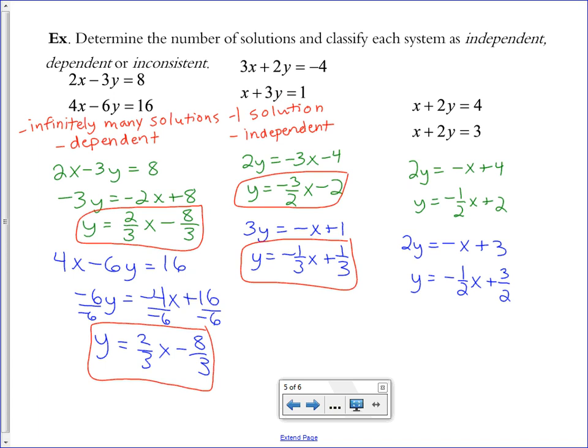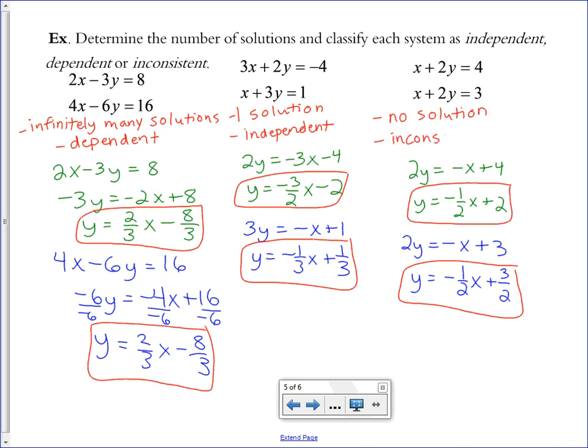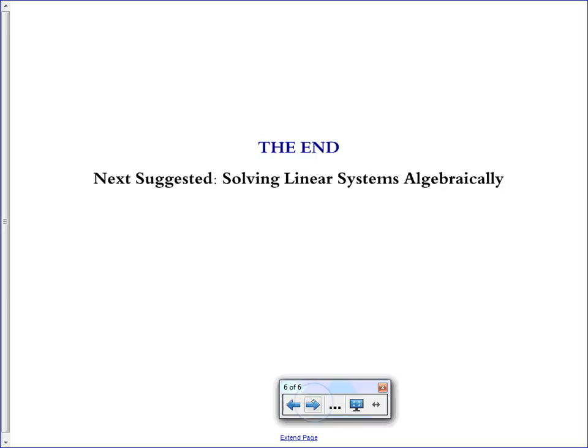It looks like they have two different y-intercepts that are going to start at different places on the y-axis. But then they both have the slope of negative 1/2. So they're going to both go down 1 over 2 to the right, down 1 over 2 to the right. And these two lines will never cross each other because they have the same slope. Because they have the same slope and a different y-intercept, there is no solution. They don't start at the same place and they'll never catch up to each other. Which we classify as an inconsistent system. And that is all.